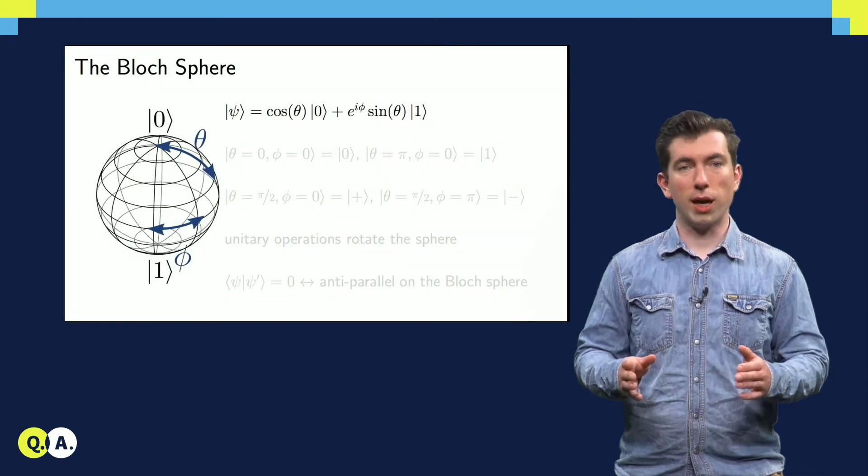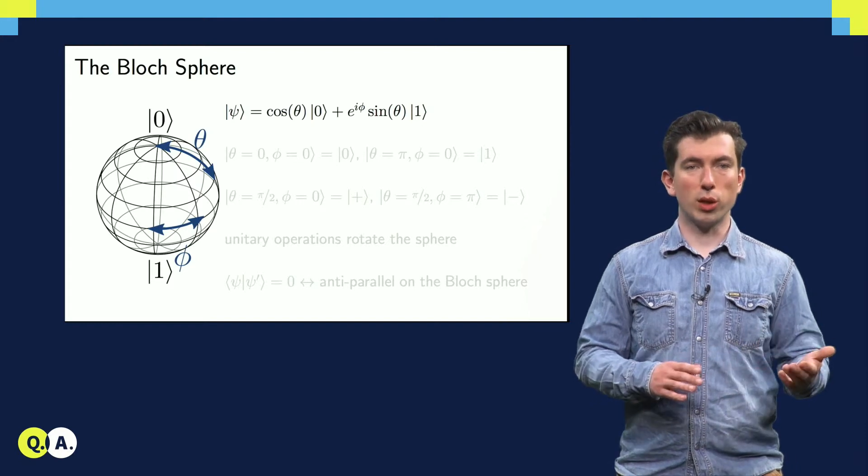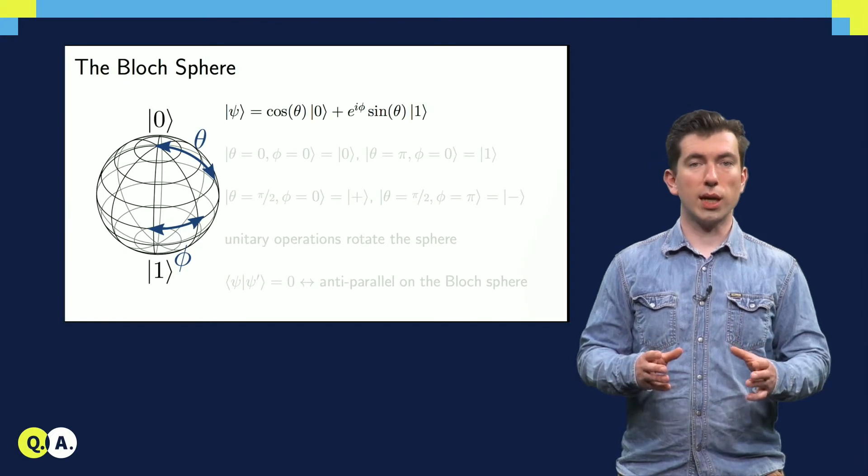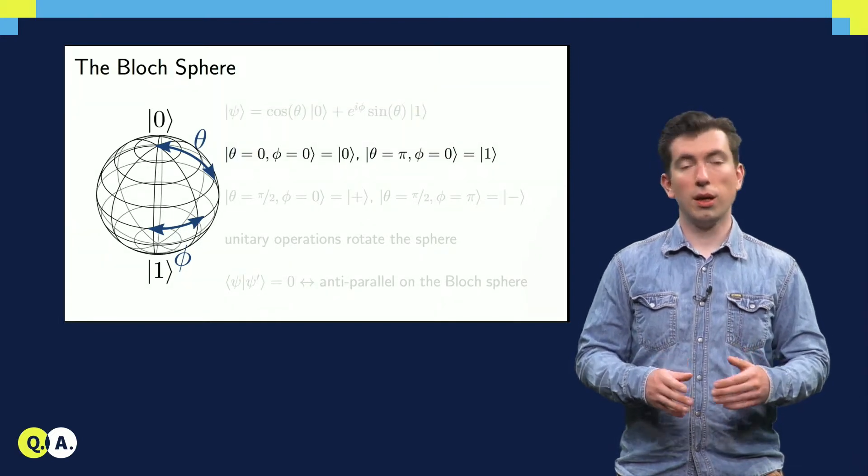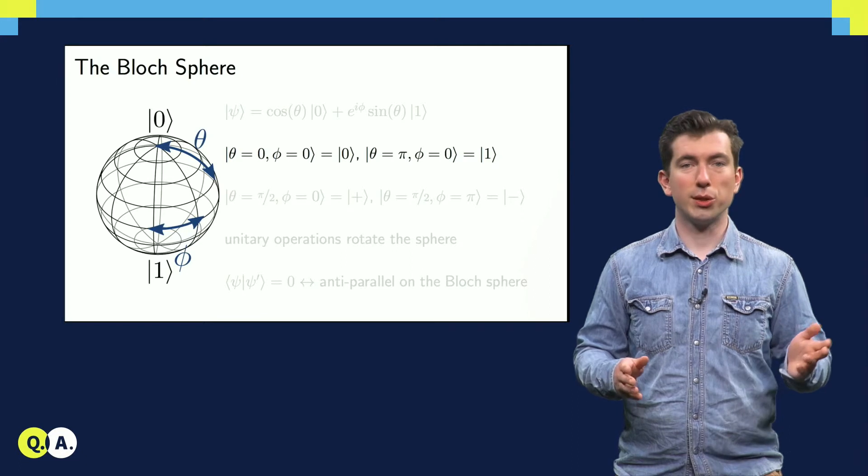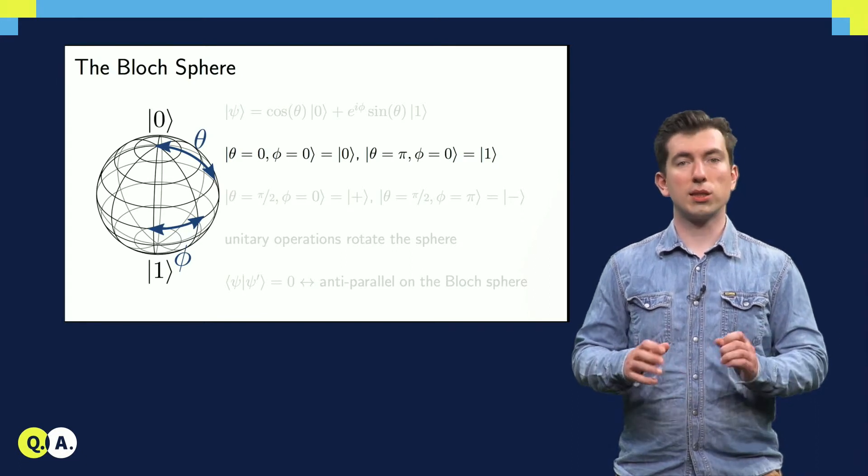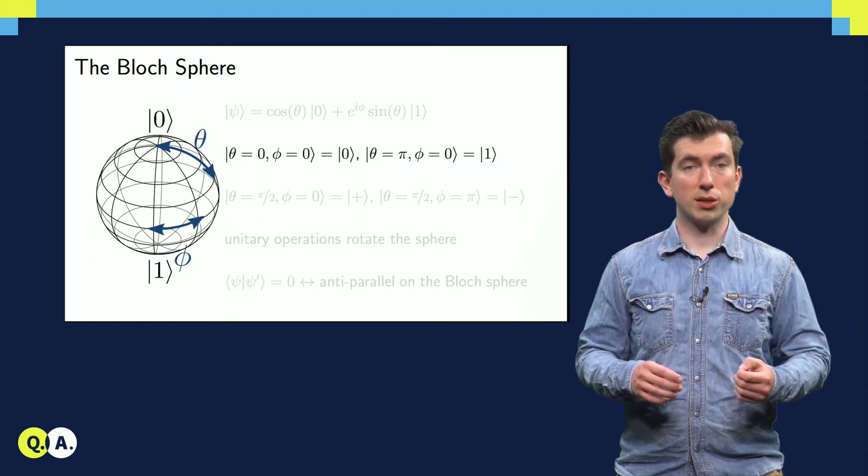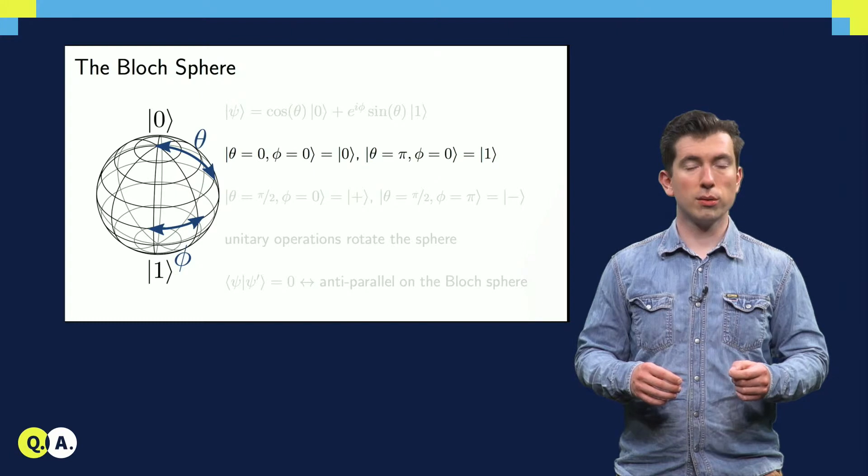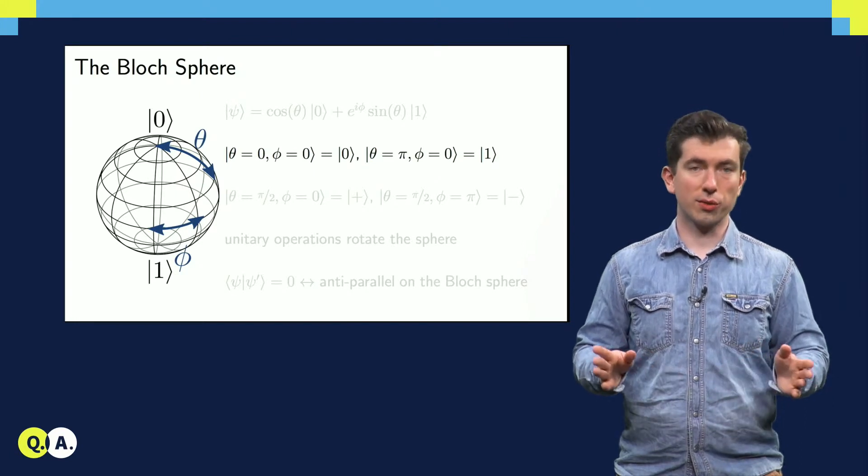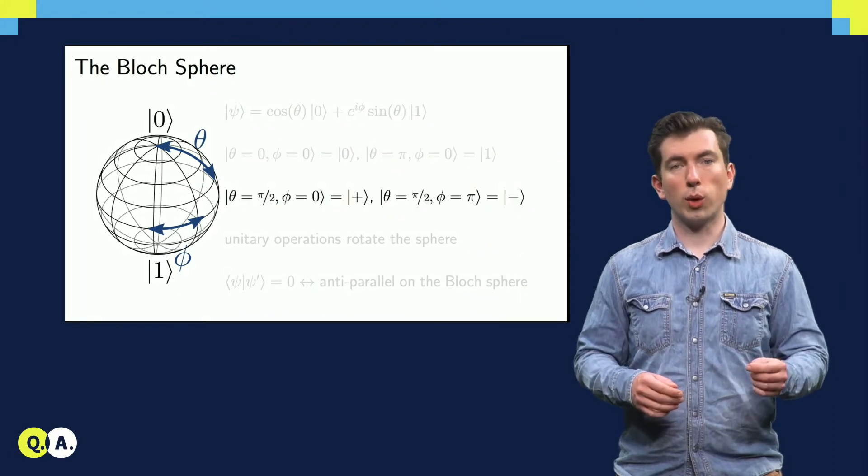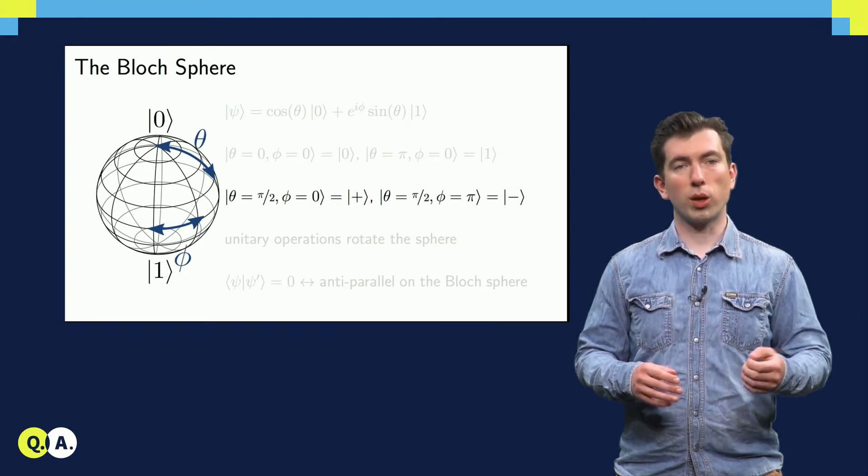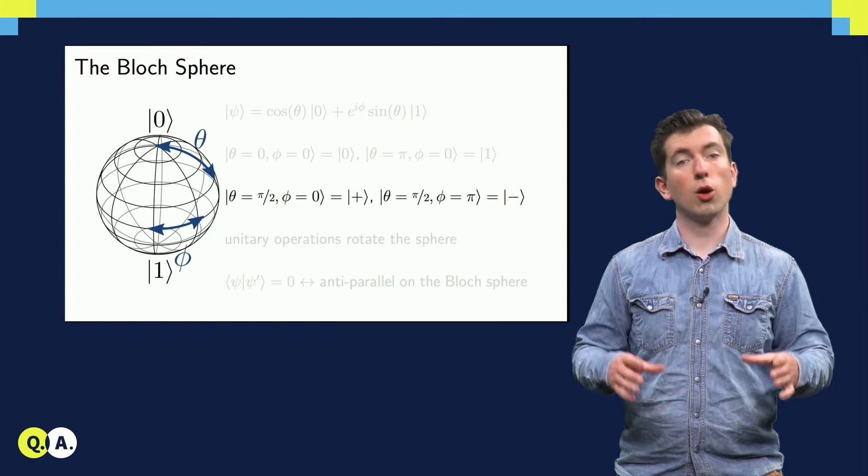This family of angles theta and phi also describes the set of points on the surface of a sphere of unit radius in 3D space. We can see that, setting theta to 0 and phi to whatever we want, here it's 0, we get cos theta equals 1 and sin theta equals 0, so the corresponding state is simply the 0 basis state. If we set theta to pi, however, we get the 1 state, regardless of the setting of phi. Likewise, if we set theta to pi by 2, and phi to either 0 or pi, we get one of the states from the plus-minus basis, on the equator of the sphere.